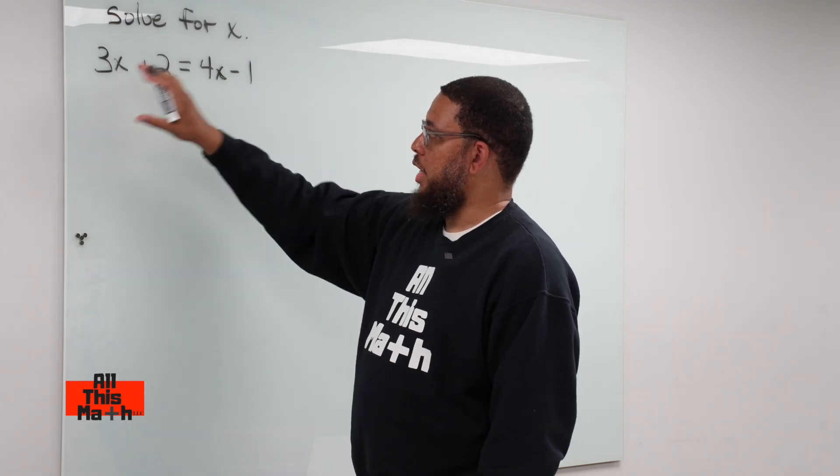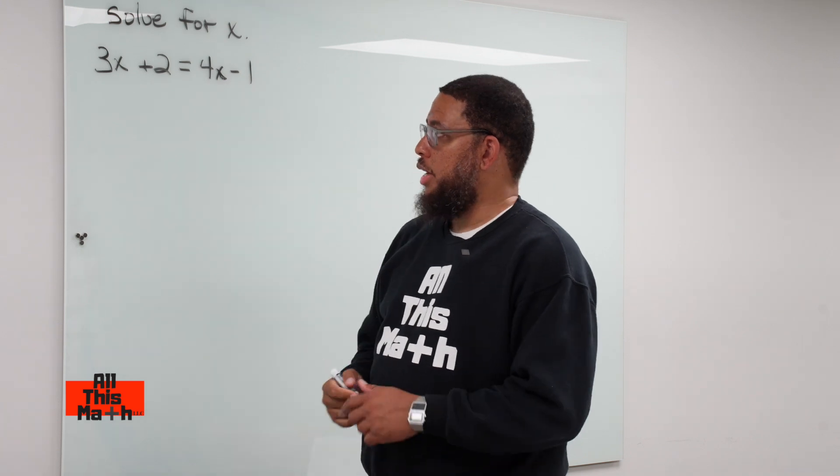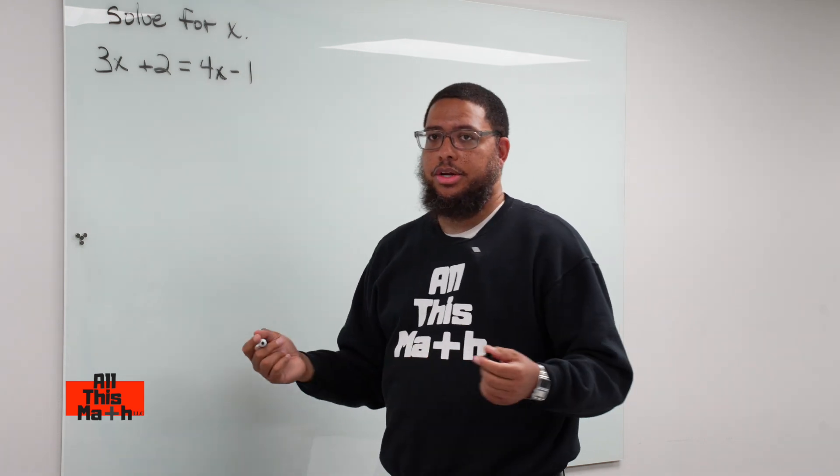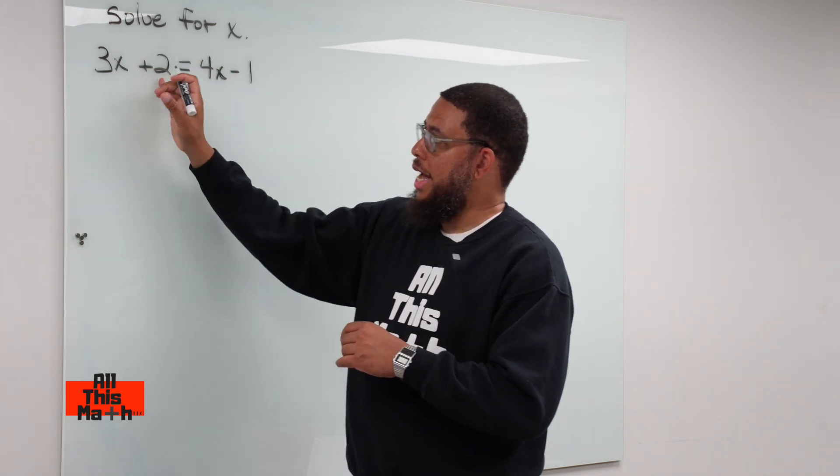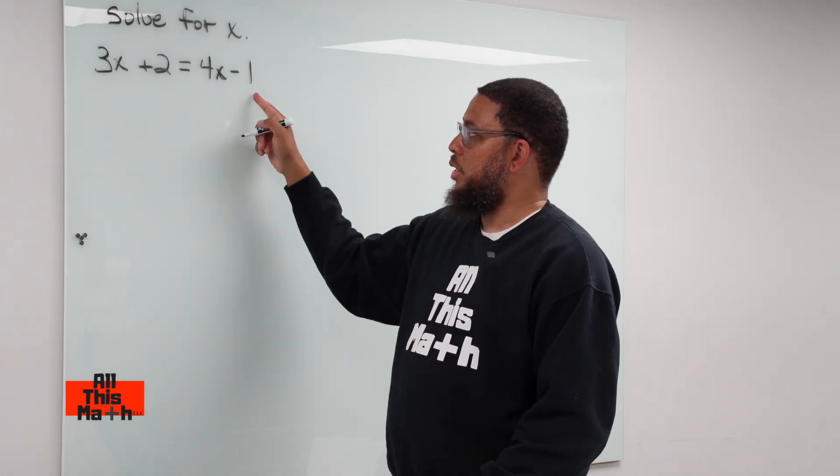I got an x term on the left side, I got an x term on the right side. But the equation is essentially neater and easier to work with if all your x's are organized together and all your constants, because 2 is a constant and negative 1 is a constant.